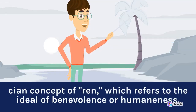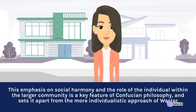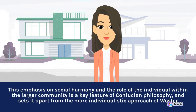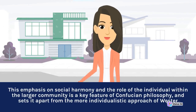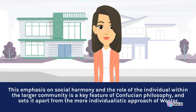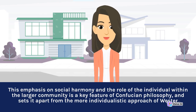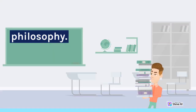This idea is encapsulated in the key concept of Ren, which refers to the ideal of benevolence or humaneness. This emphasis on social harmony and the role of the individual within the larger community is a key feature of Confucian philosophy, and sets it apart from the more individualistic approach of Western philosophy.